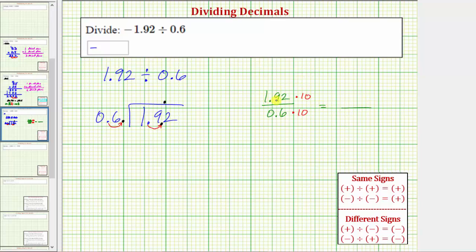we would have 1.92 times 10 which equals 19.2, and 0.6 times 10 is equal to 6. So 1.92 divided by 0.6 is equal to 19.2 divided by 6. Notice how multiplying by 10 is the same as moving the decimal point to the right one place.